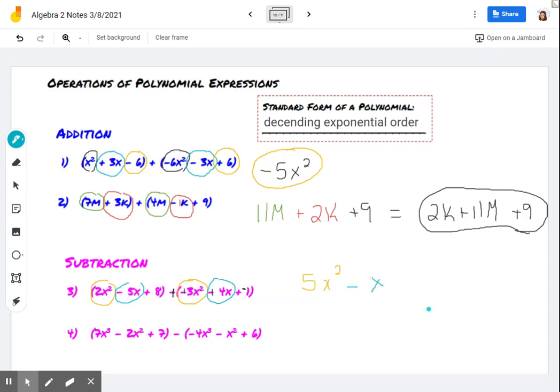Next is negative 5x plus 4x. So that's negative 1x. You can put the 1 there if you need to, but it's not necessary. Last one, positive 8 and a negative 1 is going to give us positive 7. So here, our example is going to be a quadratic trinomial.